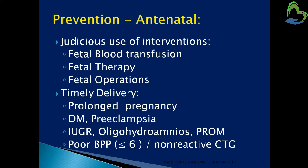Other antenatal prevention measures include judicious use of interventions like fetal blood transfusion and fetal therapy; timely delivery in conditions such as diabetes mellitus, pre-eclampsia, IUGR, oligohydramnios, and premature rupture of membranes (PROM); acting on a poor biophysical profile; and responding to non-reactive cardiotocography (CTG) findings.